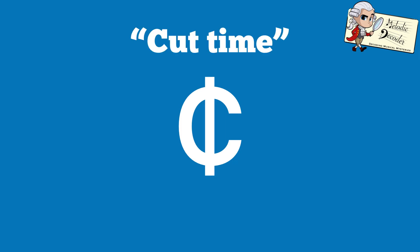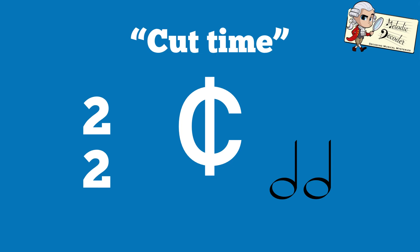What if you see a C with a line through it? This means cut time and is another way of saying 2-2.